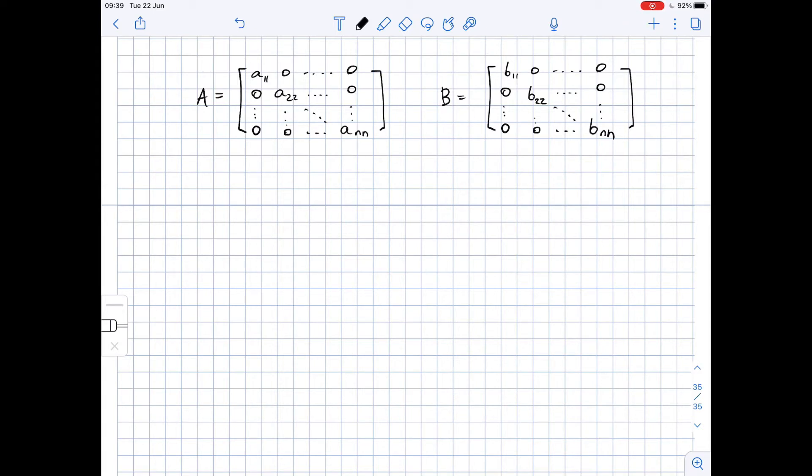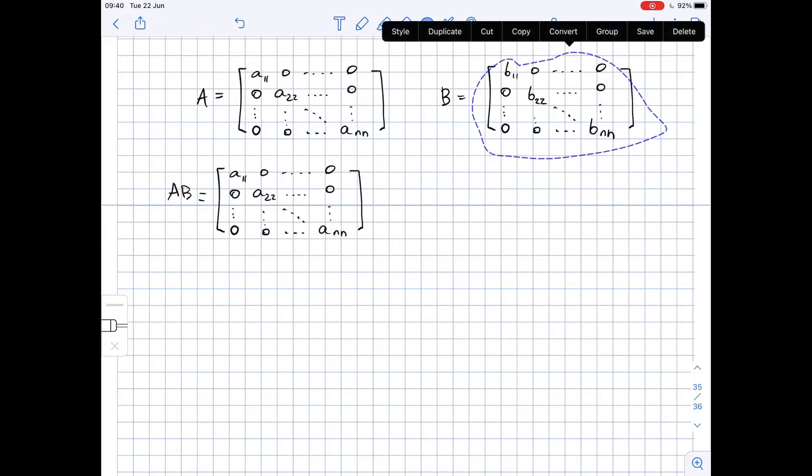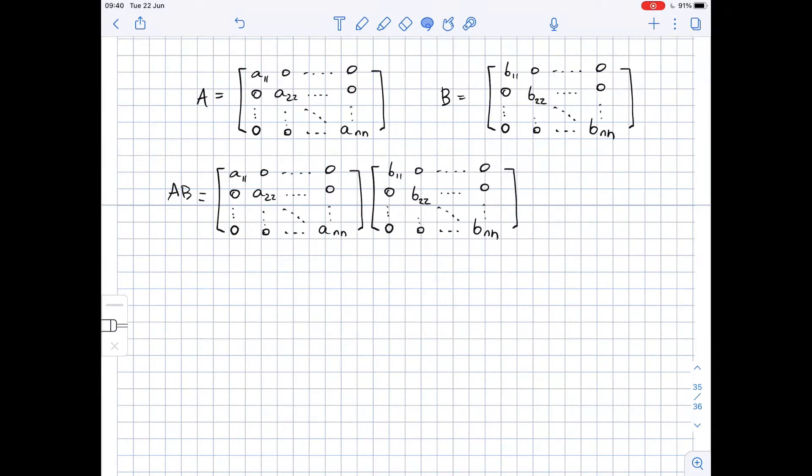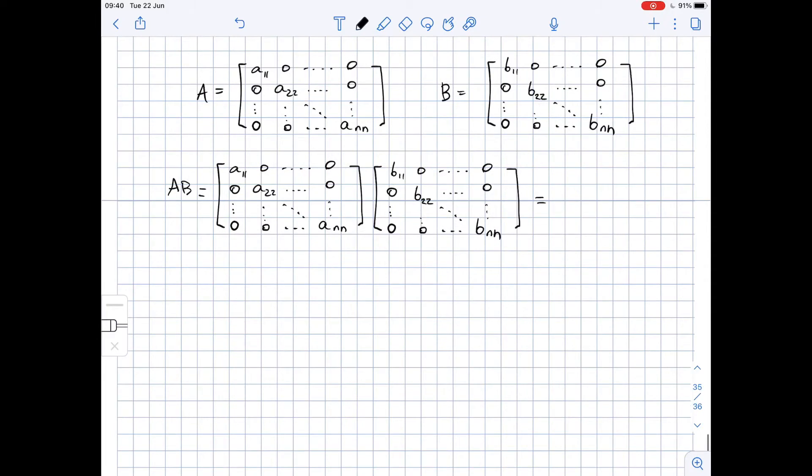Well, so now let's look at AB. AB equals matrix A times matrix B. So it equals, again, we remember that multiplication is about finding dot products of the corresponding rows and columns.